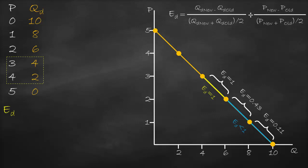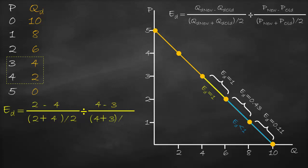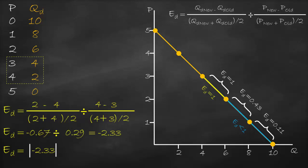Now let's calculate price elasticity from price 3 to 4. New quantity demanded is 2 minus 4, divided by its average (2 plus 4) divided by 2, divided by the corresponding price change. This gives us negative 0.67 divided by 0.29, which equals negative 2.33. Using absolute value gives us 2.33. Since 2.33 is greater than 1, demand is elastic between prices 3 and 4.